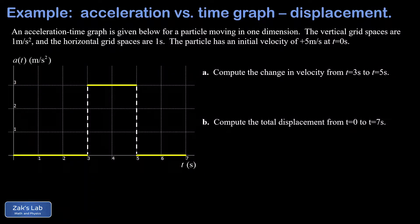In this video we're looking at a kinematics graph problem, and this one is especially tricky. We're given an acceleration-time graph. For the first three seconds the acceleration is zero, then it jumps up to three meters per second squared for two seconds, and then back down to zero for the final two seconds. Each vertical space is one meter per second squared, each horizontal space is one second, and we're given an initial velocity of five meters per second at t equals zero.